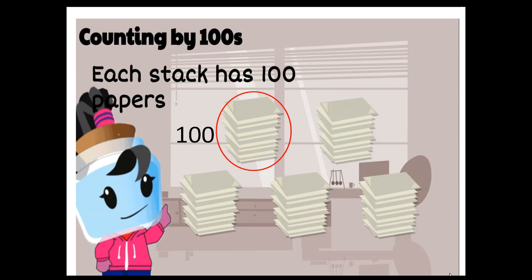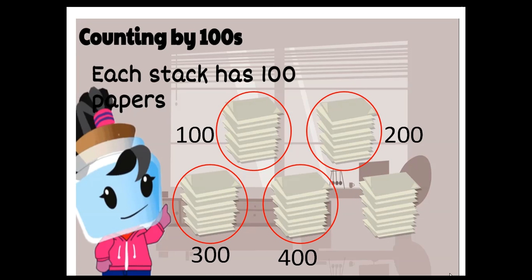This is 100, 200, 300, 400, 500. Finally, we have 500 sheets of papers. Okay, my dear students, and remember, only the first digit changed and the two other numbers stayed 0.